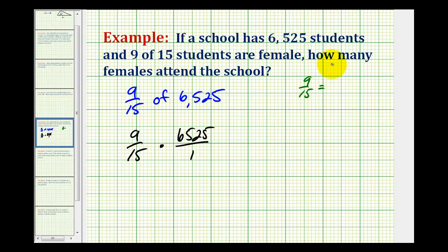The prime factorization of 9 is 3 times 3. The prime factorization of 15 is 3 times 5. Notice how these 3's would simplify out, or 3 over 3 simplifies to 1.